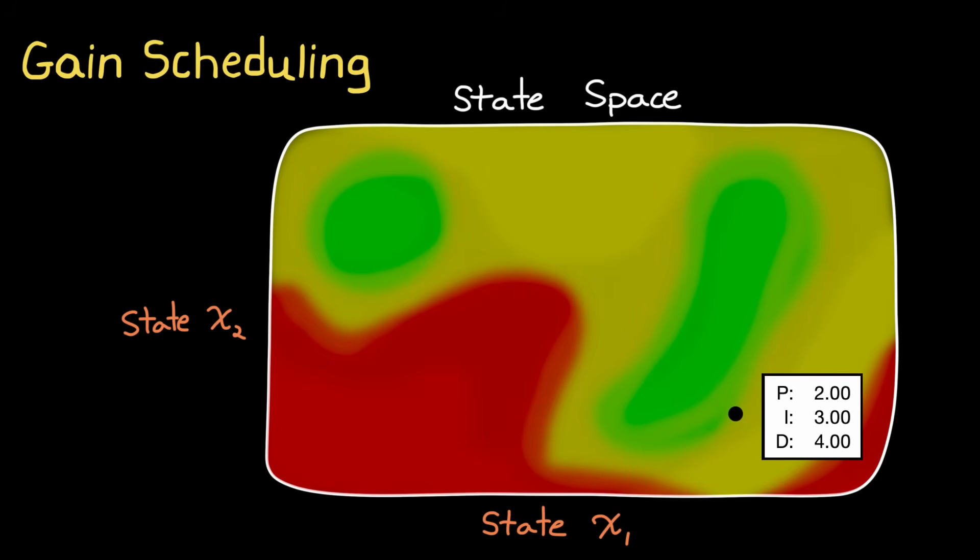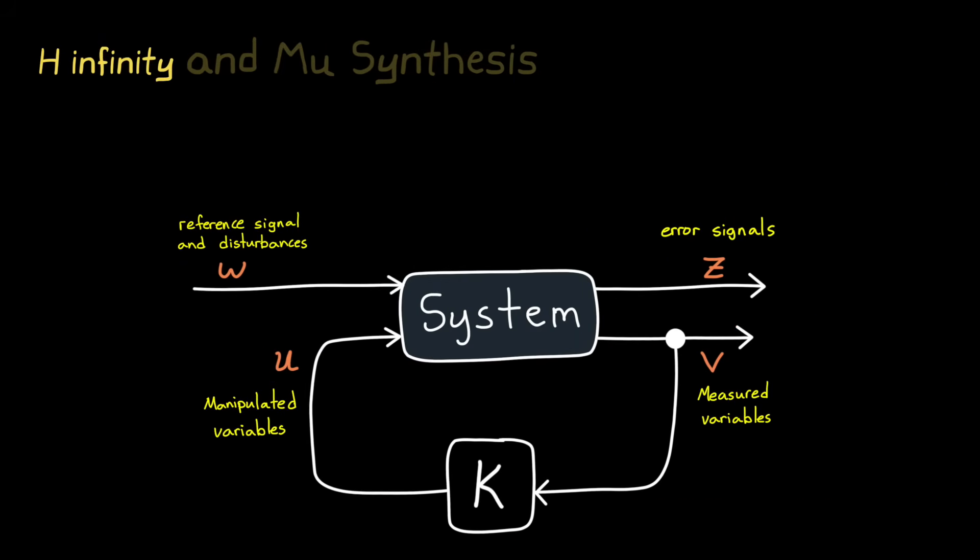There are linear controllers that are designed specifically to be robust to uncertainties without having to schedule their gains. And two such methods are h-infinity and mu synthesis. h-infinity is a controller that's designed in such a way that minimizes the worst-case gain from external disturbances to the system output while driving the error signals to zero. And since it's explicitly trying to minimize the effect of any external disturbances into the system, there is an amount of robustness to these disturbances, allowing you to meet system stability and performance requirements in their presence.